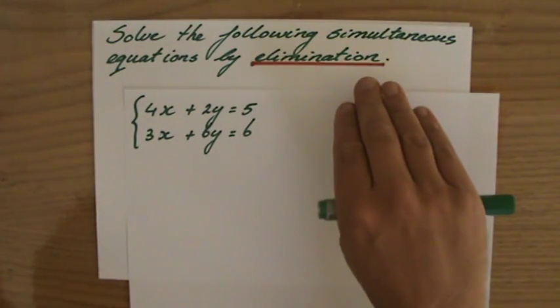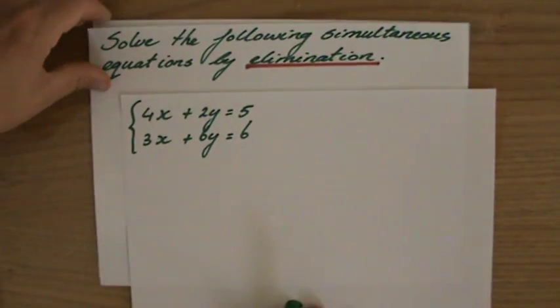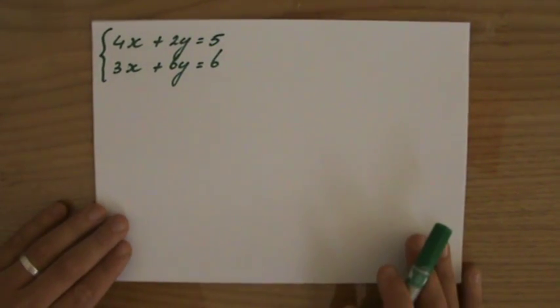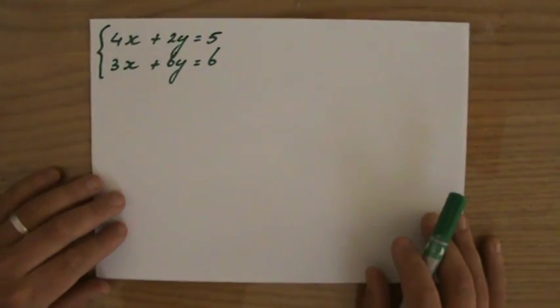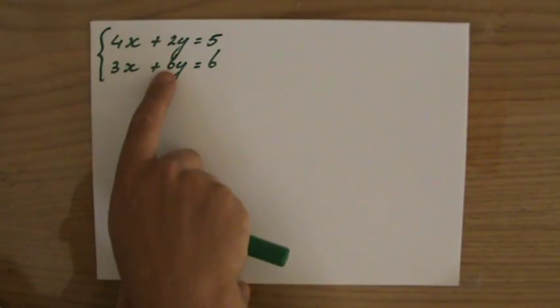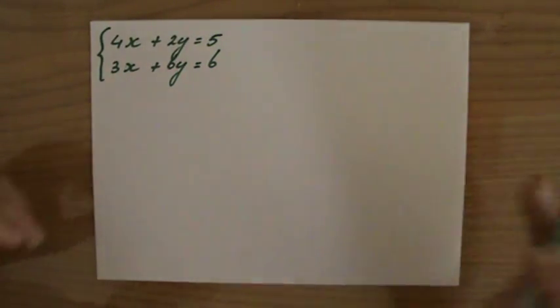Where the elimination method means we are trying to eliminate and get rid of one of the variables by either adding or subtracting the two equations. Now before I start eliminating, I always check are my x's, my y's, and then my numbers on top of each other. Are they in the same order? And in this case they are. So that is fantastic.